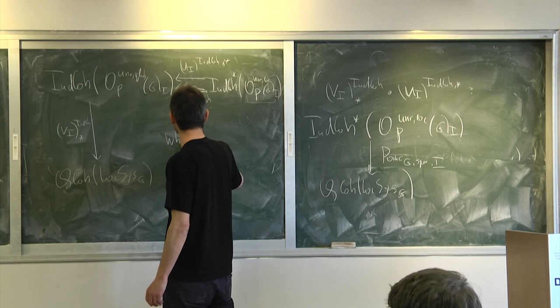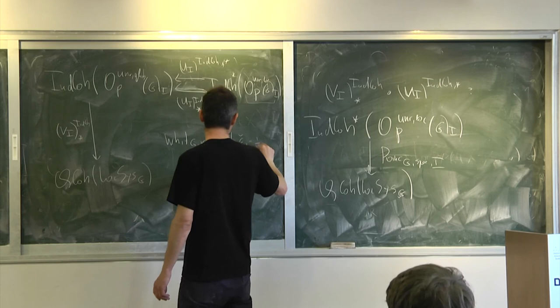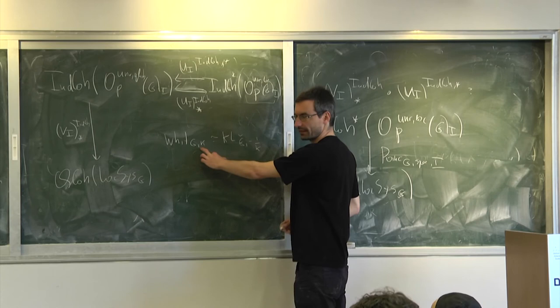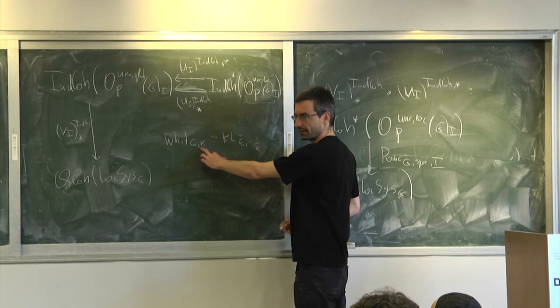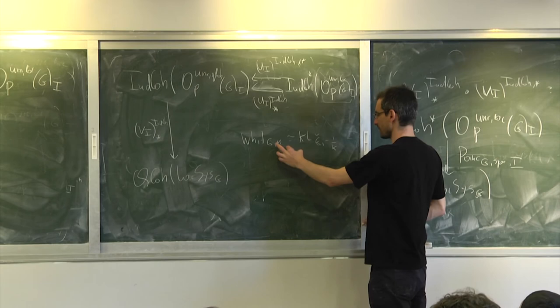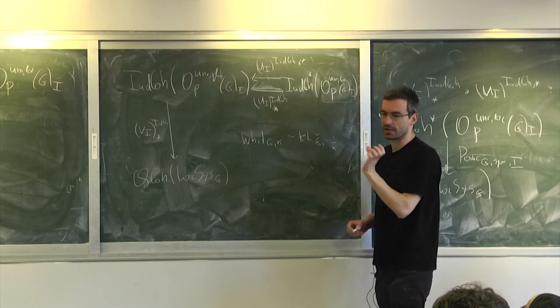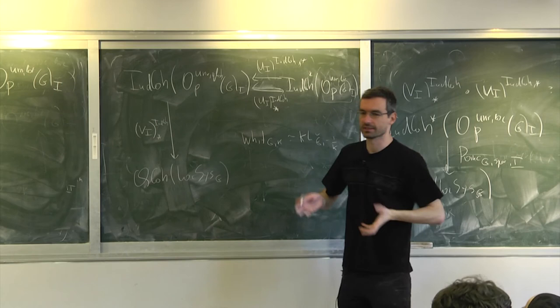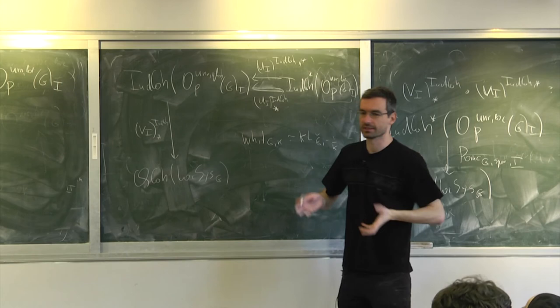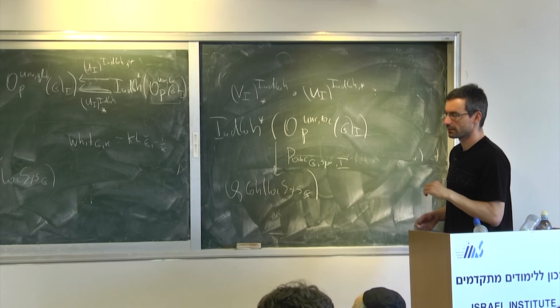Width for G at level kappa is Kazhdan-Lusztig G-check at level 1/kappa. When kappa becomes infinity, this becomes critical — the Kazhdan-Lusztig category at critical level — with a super large center. This map has the property that it sends everything to quasi-co. In the end, the essential image will have two kinds of generators: these generators and Eisenstein series. The nilp comes from Eisenstein series, and there are spectral Eisenstein series on the other side.